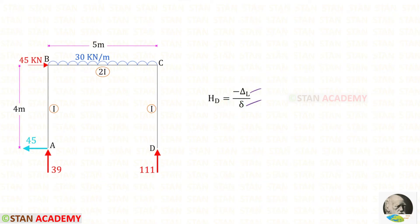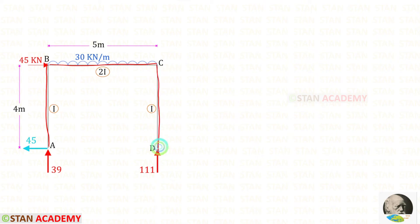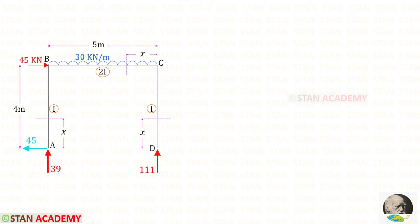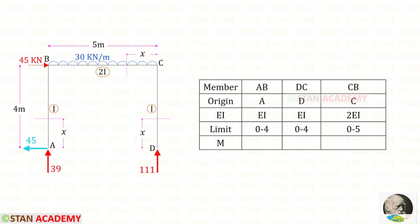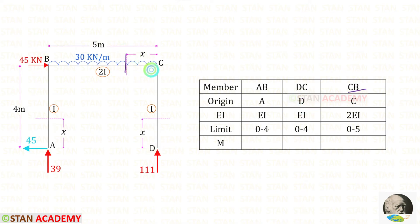We know the formula to find HD is −δ_L / δ. To find both of them we can use the unit load method — we have to make sections. In this frame there are 3 different parts: AB, BC, and CD, so we have to make 3 sections: one in AB, one in BC, and one in CD. You can see that I have made 3 sections. The section in AB is made at a distance x from A, the section in CD is made at a distance x from D, and the section in CB is made at a distance x from C. Now let us make a table with the members AB, DC, and CB. For the section in AB the origin is A, for DC the origin is D, and for CB the origin is C.